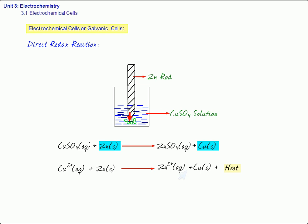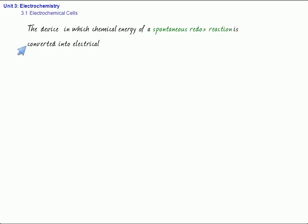Now if the same redox reaction is allowed to take place in two different containers — indirectly — then this chemical energy, which is currently converted into heat, will instead be converted into electrical energy. That becomes the source of an electrochemical cell. The devices in which the chemical energy of a spontaneous redox reaction is converted into electrical energy are called electrochemical cells or galvanic cells. Electrochemical cells are based on spontaneous redox reactions, and the chemical energy is converted into electrical energy.